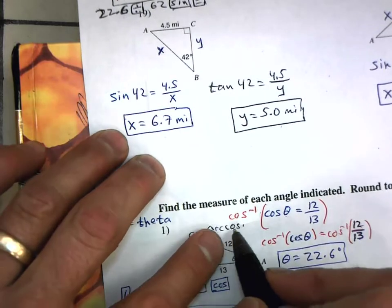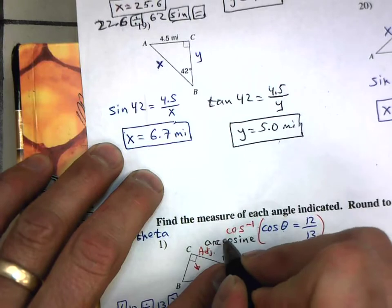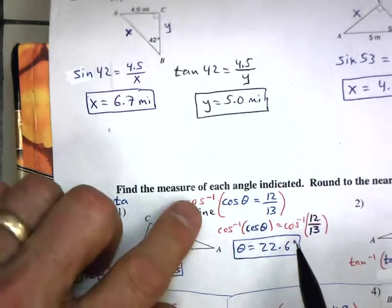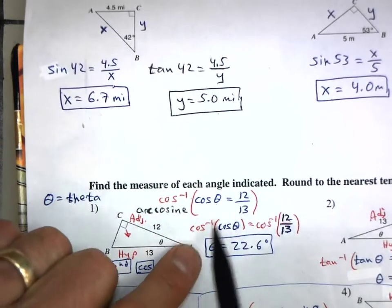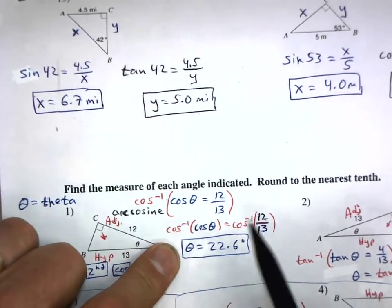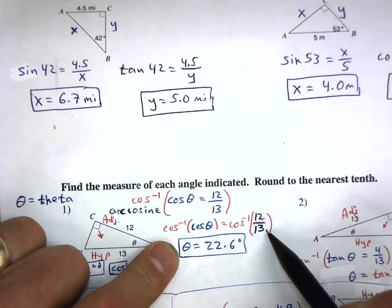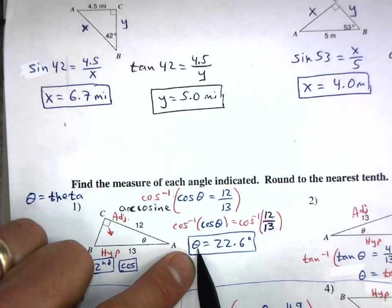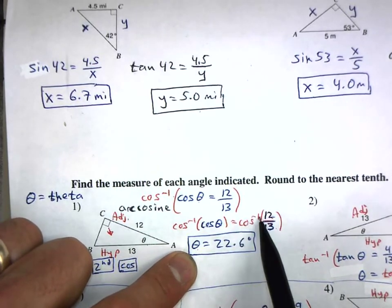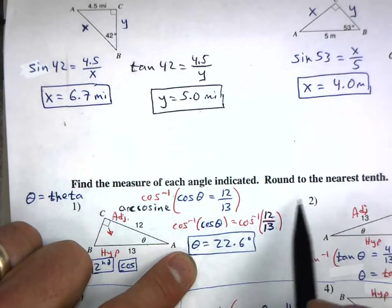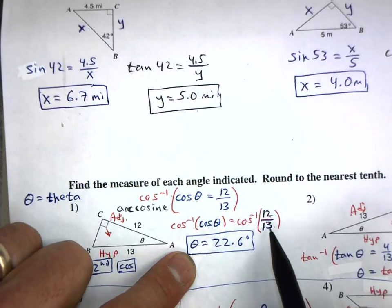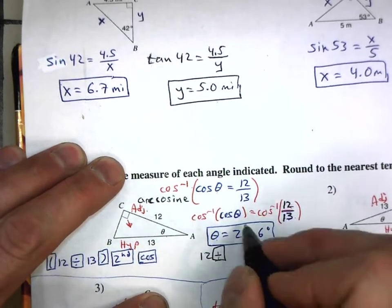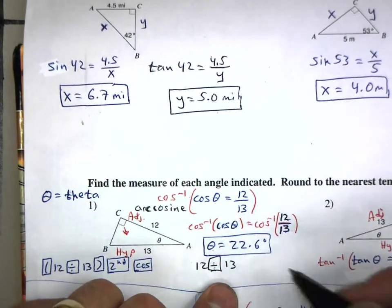Arc cosine is the same thing as inverse cosine — two different names for the same operation. Take the arc cosine of both sides: the arc cosine of cosine of theta leaves just theta, and on the right side you have the inverse cosine of 12 over 13. To enter this in your calculator, type 12 divided by 13 and hit equals to get that decimal value.